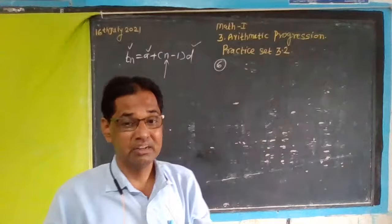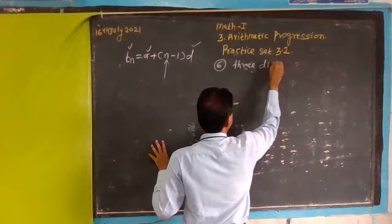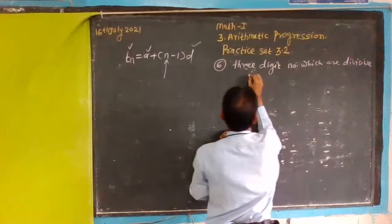For this problem, we need to find the three-digit numbers which are divisible by 5. Let's start by identifying the sequence of three-digit numbers divisible by 5.